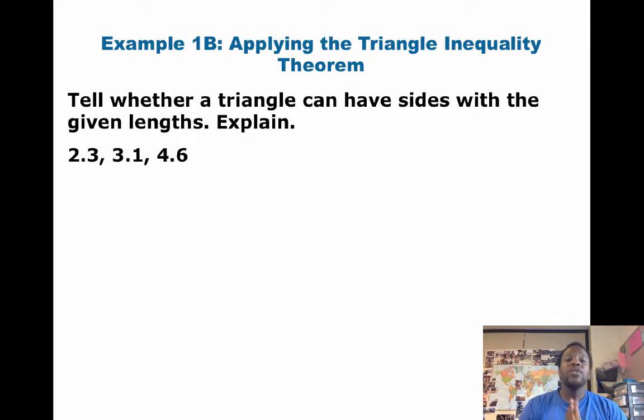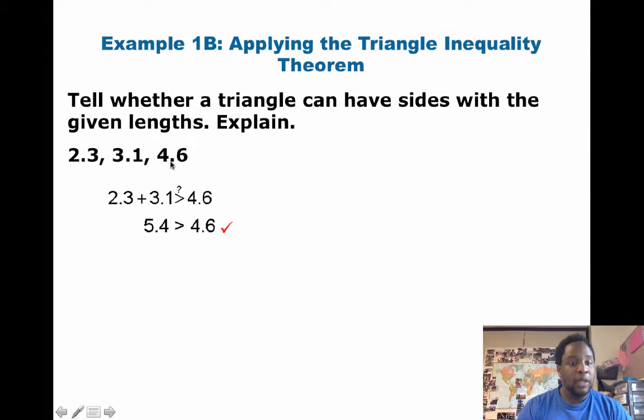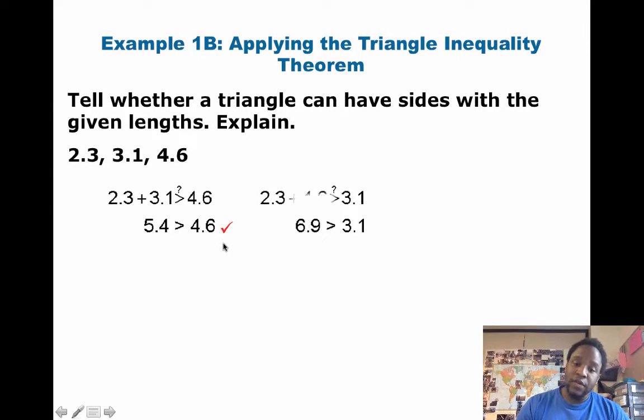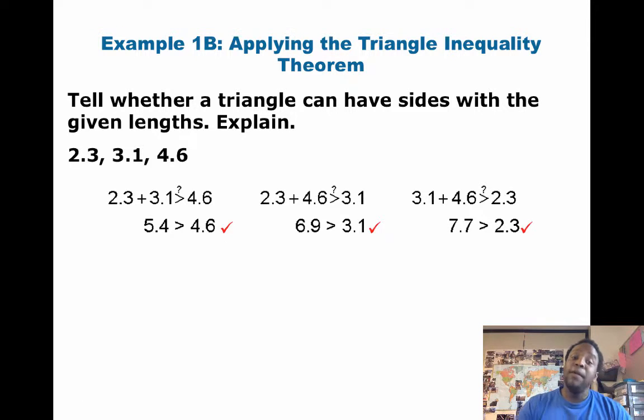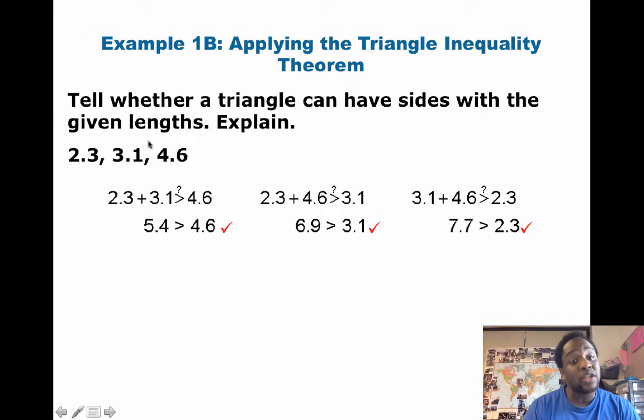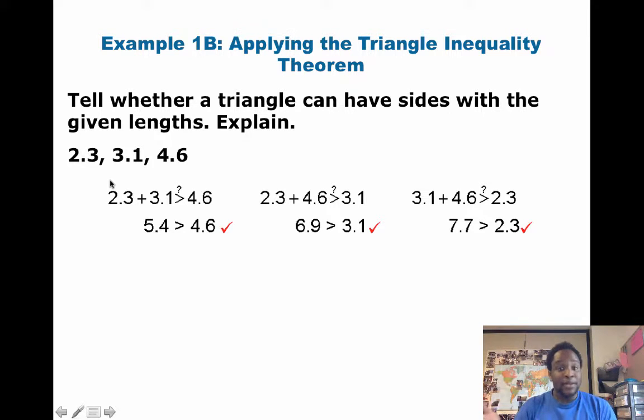Okay, how about with 2.3, 3.1, and 4.6? So, we can start off with two. We can look at the smallest two numbers, 2.3 and 3.1. That equals 5.4. And 5.4 is greater than 4.6. If you really want to, you can check the other ones as well. But really, all you need to do is check the smallest two sides. And if you add them together, and they're greater than the longest side, then we're good. It's a triangle.